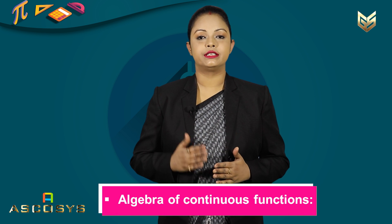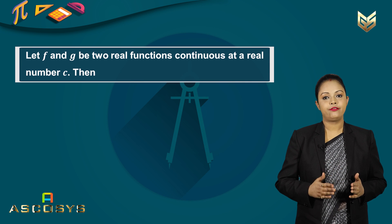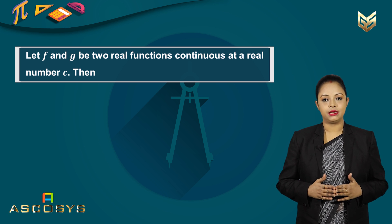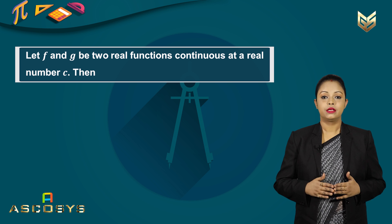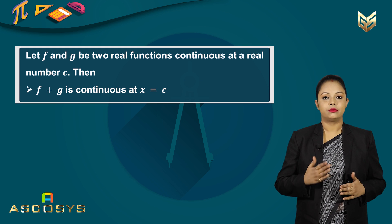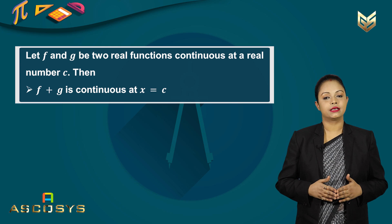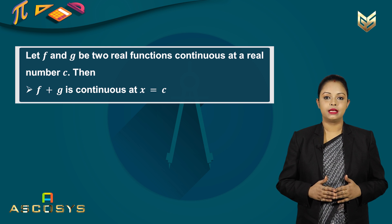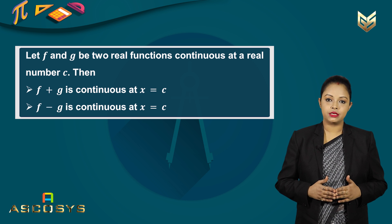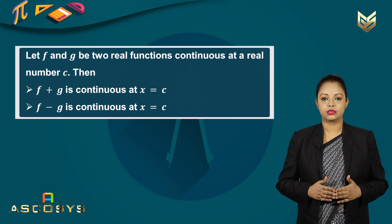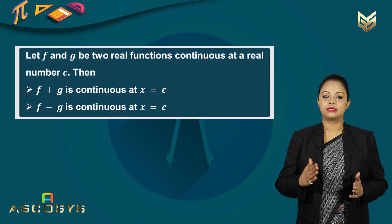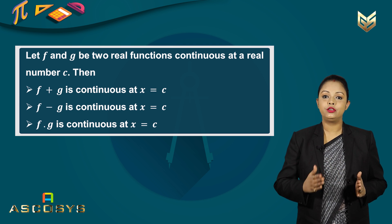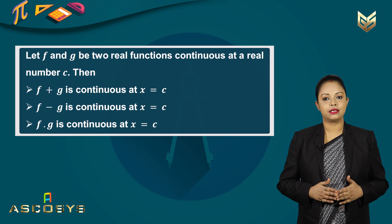Let us now see the algebra of continuous functions. Let f and g be two real functions continuous at a real number c, with co-domain of real numbers. Then f plus g — the sum of two continuous functions — is always a continuous function, so f plus g is continuous at x equal to c. Similarly, the difference of two continuous functions is also always a continuous function, so f minus g is continuous at x equal to c. The product of two continuous functions, f into g, is also continuous at x equal to c.